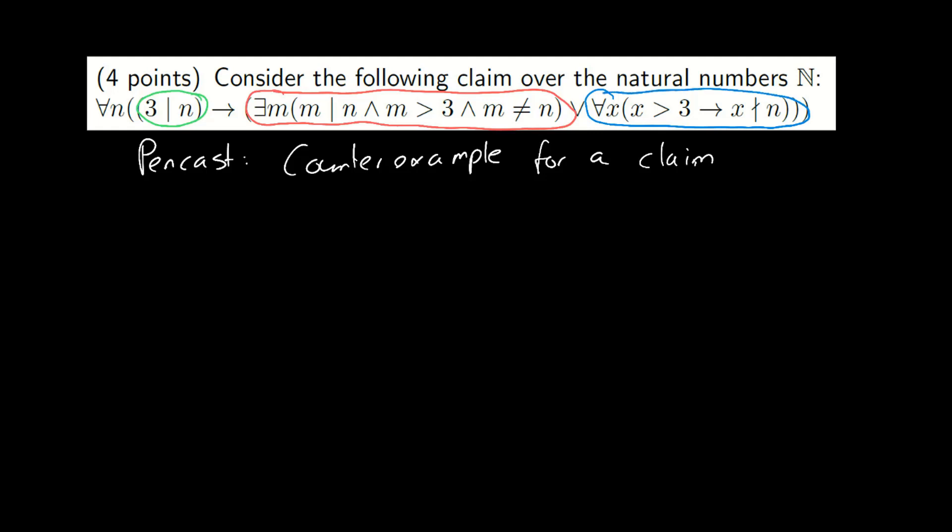And what we're going to do is try and find a counterexample to this claim. Now this claim is an implication which means the first part, 3 divides n, needs to be true. It also means that the entire second part must be false. In this case, that means that the existential part and the for-all part must both be false.